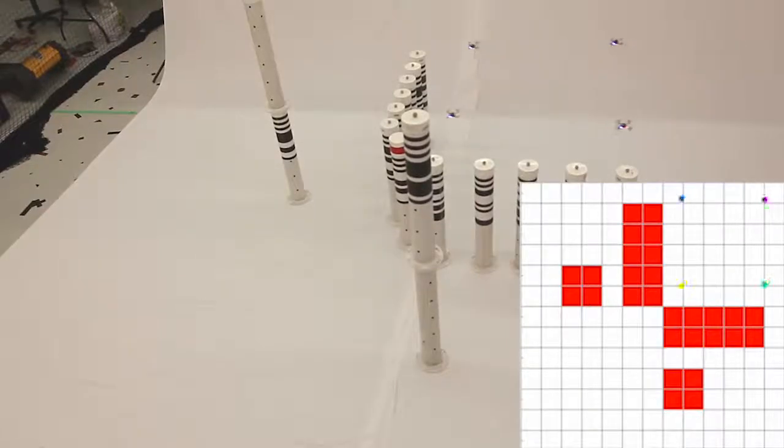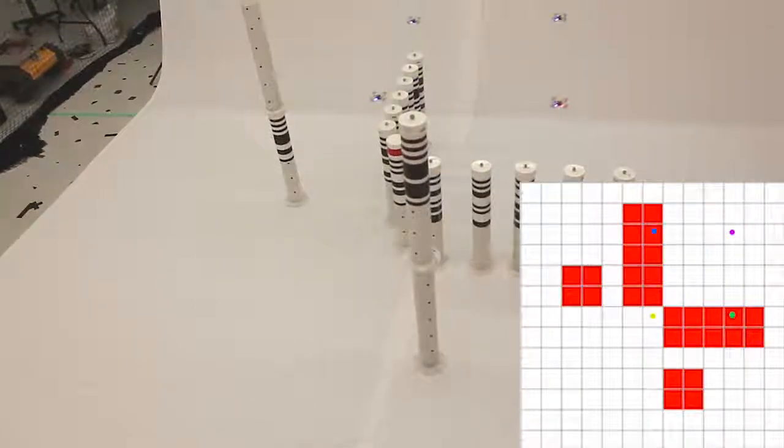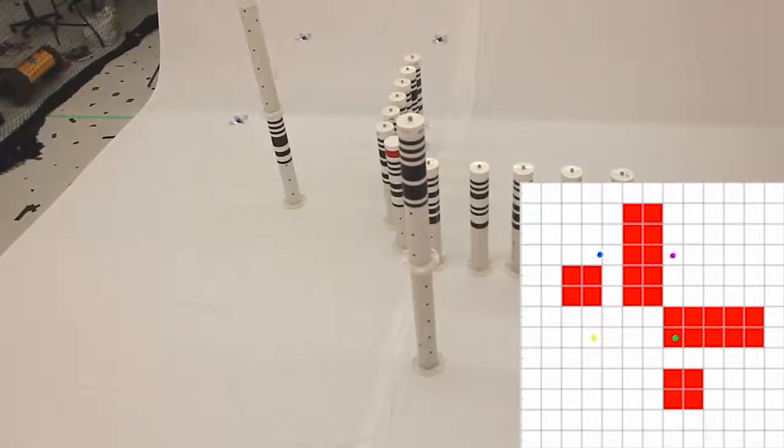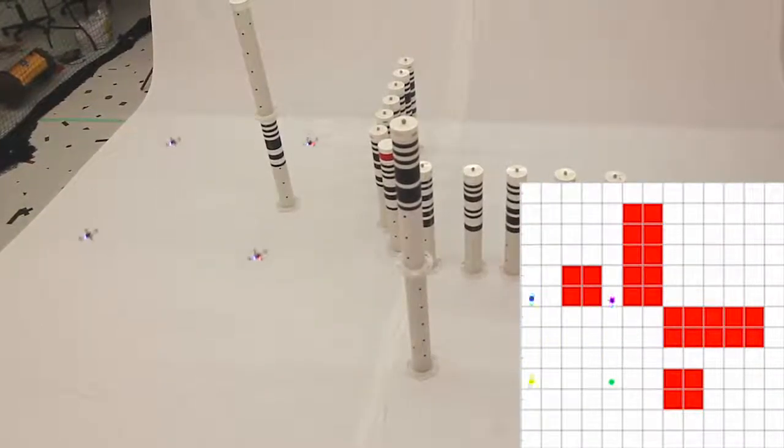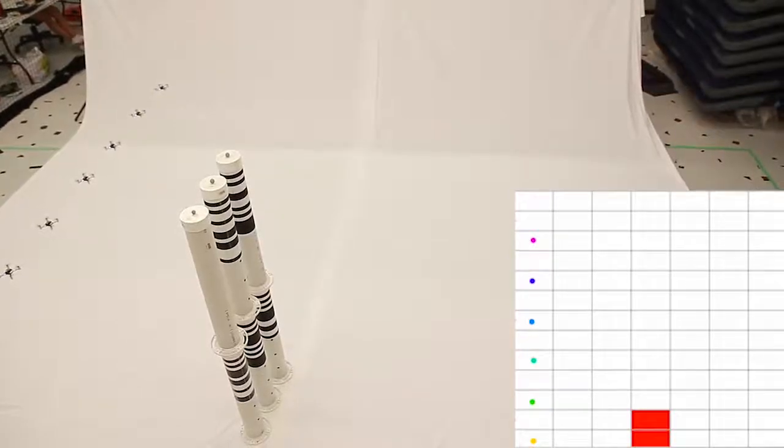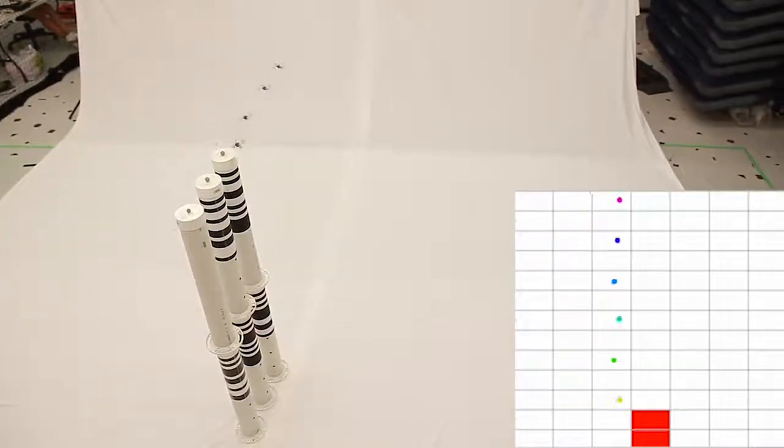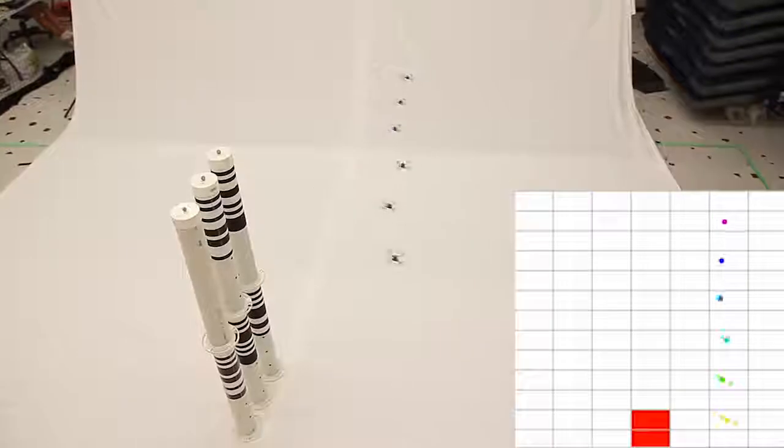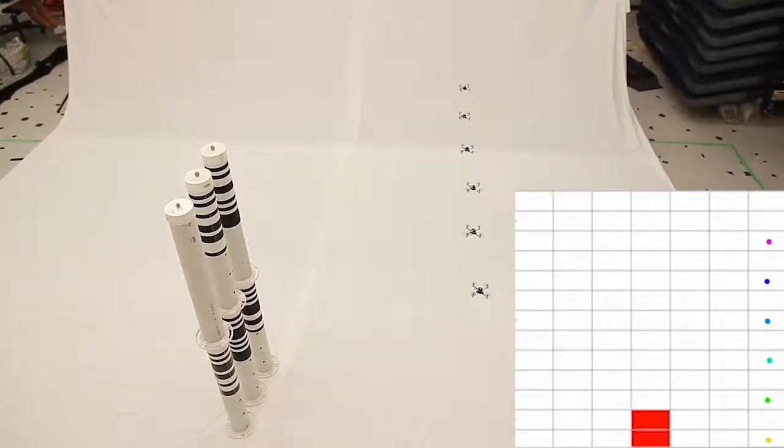Using these formation primitives, we can safely navigate many vehicles in a cluttered environment while maintaining a fixed formation, such as a square. Any fixed formation can be enforced, as the concatenation of our formation primitives maintains the initial relative spacing between the vehicles.